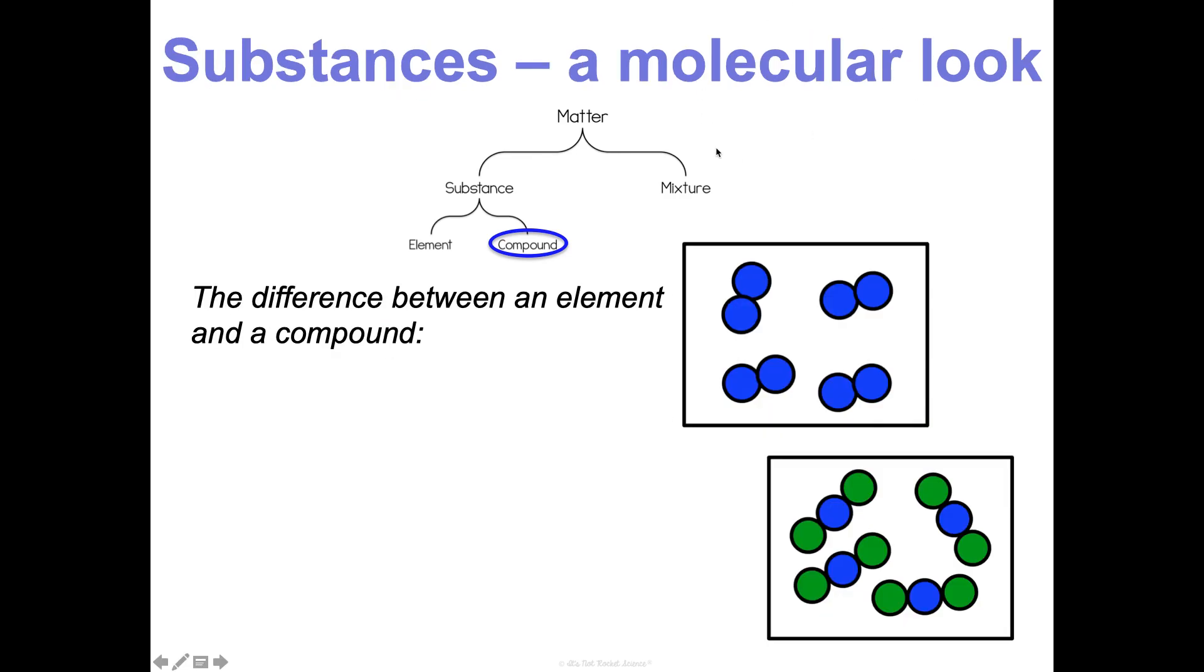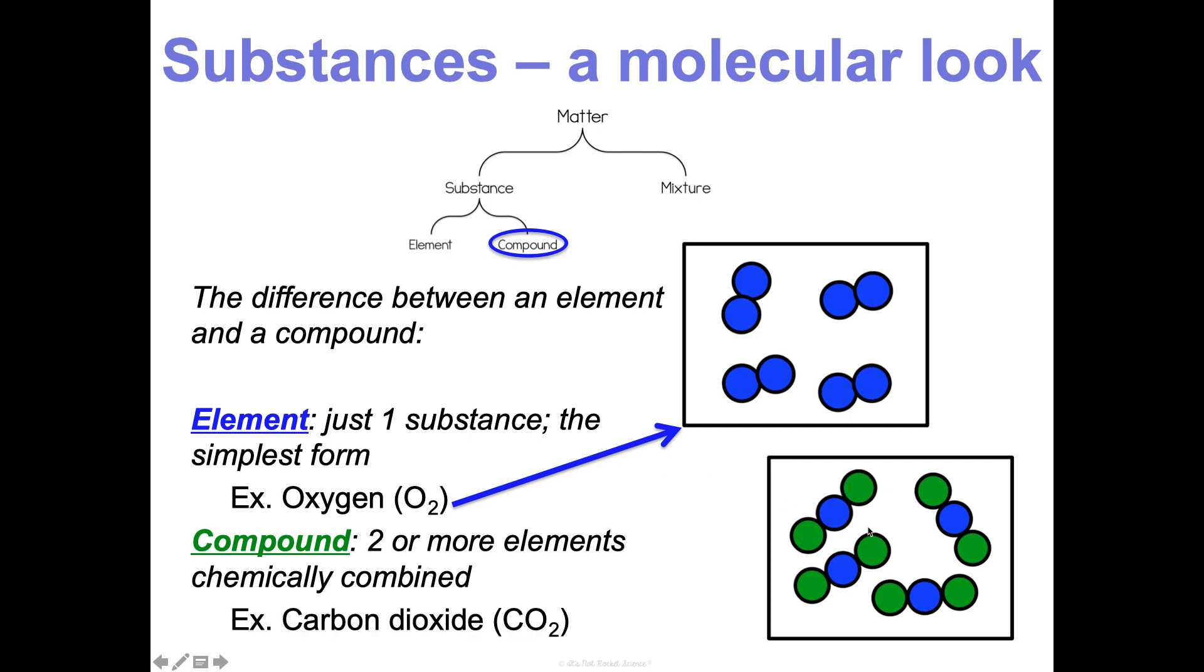Looking at a molecular level, there's a difference between an element and a compound. An element is just one substance in its simplest form. So like oxygen, even though this is diatomic, see how it looks the same throughout. They're all atoms of oxygen. They're all blue. Whereas a compound like carbon dioxide, look how we have two oxygens to one carbon. So we have a different ratio here. But again, it still looks the same throughout, making it a substance.